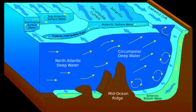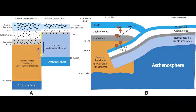While many oceanic plateaus are composed of continental crust, and often form a step interrupting the continental slope, some plateaus are undersea remnants of large igneous provinces.